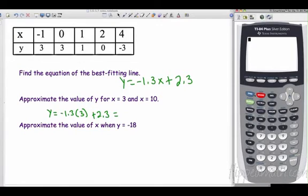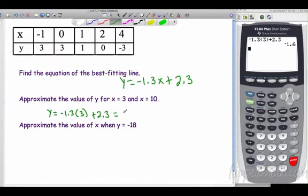I always press second quit to get to my home screen. So negative 1.3. I like using parentheses for multiplication, plus 2.3, and so that's going to give us negative 1.6. So if x were 3, we would have a value of about negative 1.6.